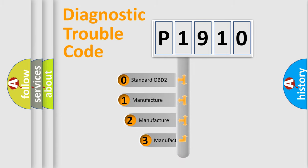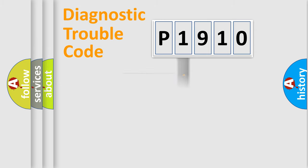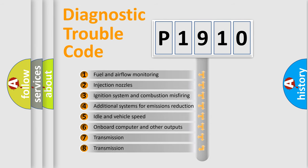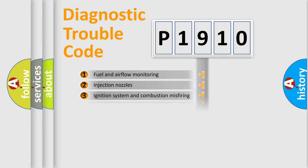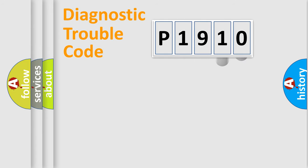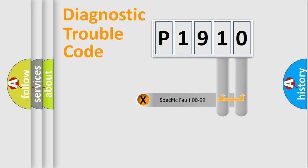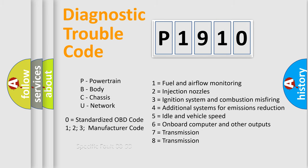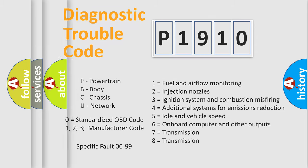If the second character is expressed as zero, it is a standardized error. In the case of numbers 1, 2, or 3, it is a more specific expression of a car-specific error. The third character specifies a subset of errors. This division is valid only for the standardized DTC code, where only the last two characters define the specific fault of the group. Such a division is valid only if the second character is expressed by the number zero.